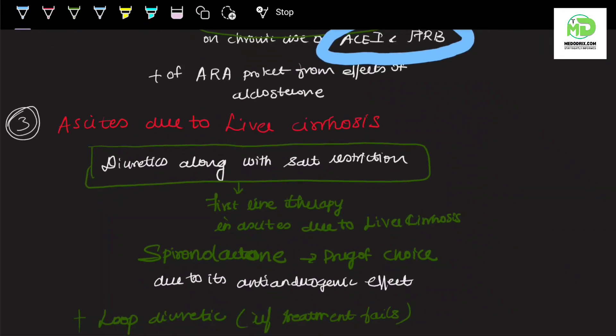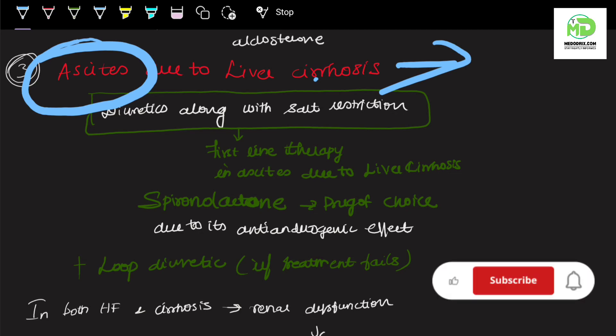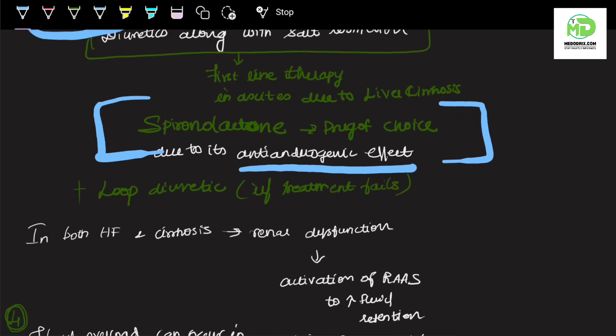The next condition is ascites due to liver cirrhosis. Whenever there is liver damage, accumulation of fluid takes place in the abdominal region, called ascites. Diuretics along with salt restriction is the first-line therapy. The choice of diuretic is spironolactone, a potassium-sparing diuretic with anti-androgenic effects, accompanied with loop diuretic.